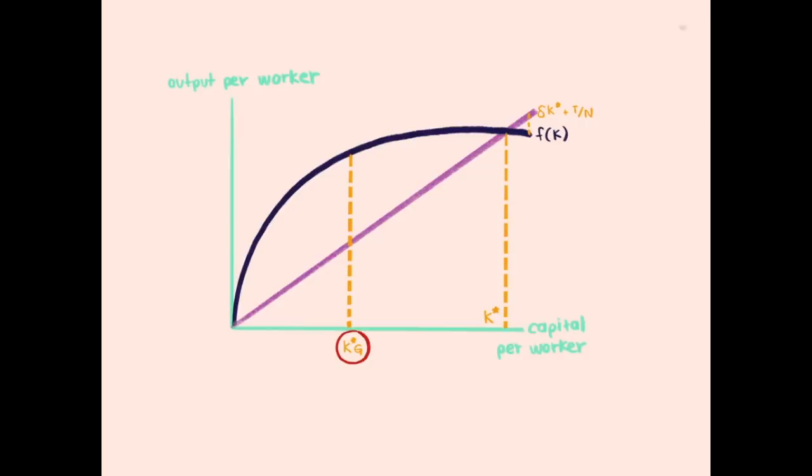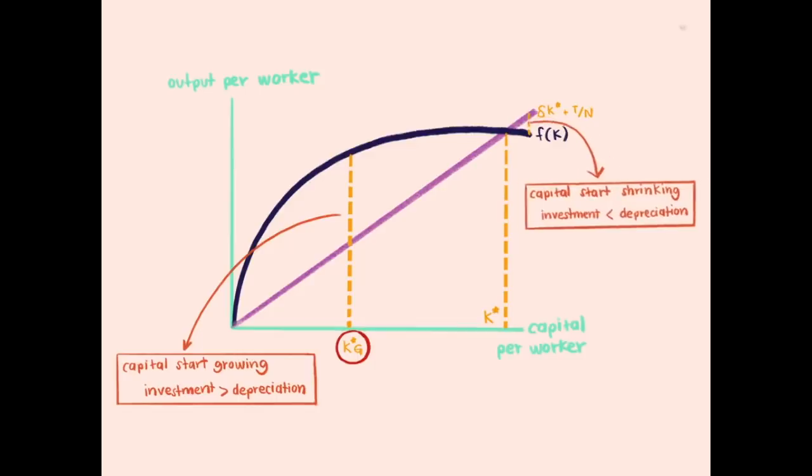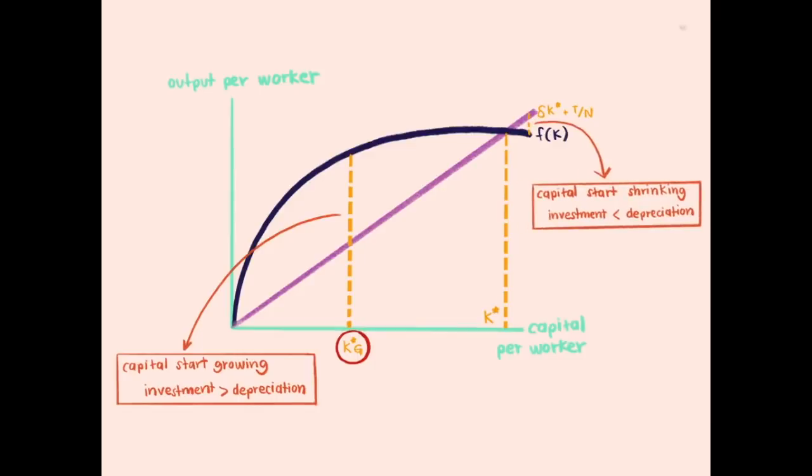This is where consumption is maximized. The condition to achieve maximum consumption is where MPK equals delta. If MPK is greater than delta, we need to increase saving rate to adjust delta to grow closer to MPK. If MPK is less than delta, we need to decrease saving rate to adjust delta to grow closer to MPK.